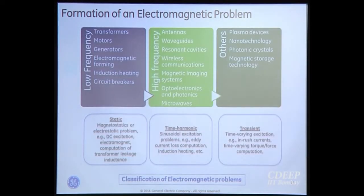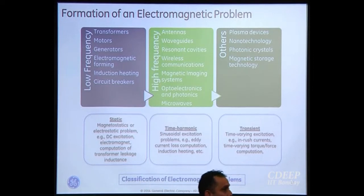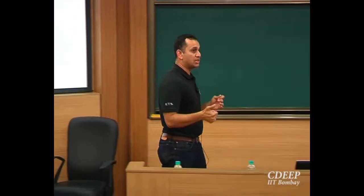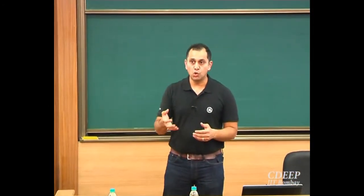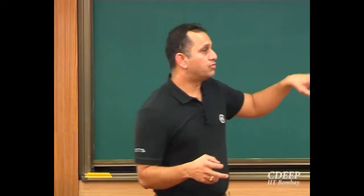Once you have the problem defined, you need to identify what you need: a transient waveform, steady-state loss numbers, or just a DC solution. That determines whether you need a two-day-long transient solve or a simpler static solve. Based on what you want, you choose the solver accordingly — static, time-harmonic, or transient. The main thing to highlight is: know the maximum length of your problem in meters, compute the operating frequency, compute its wavelength λ = c/f, and if the wavelength and dimensions are comparable, use a high-frequency formulation; otherwise use a low-frequency formulation.